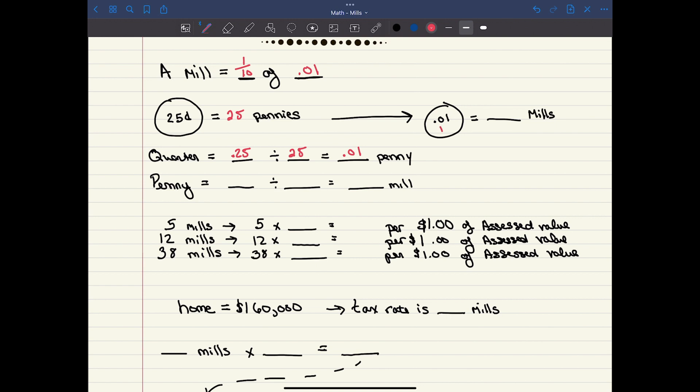Well, imagine a penny is broken down into 10 pieces, and we say there are 10 mills in every penny. A penny is worth 0.01. If we divide that into 10 pieces, we'll find out the value of a mill is 0.001.